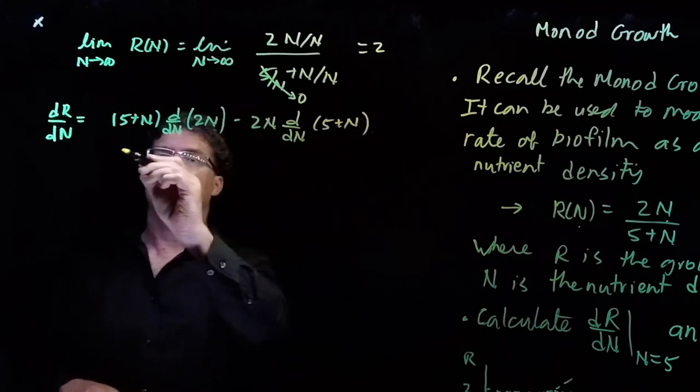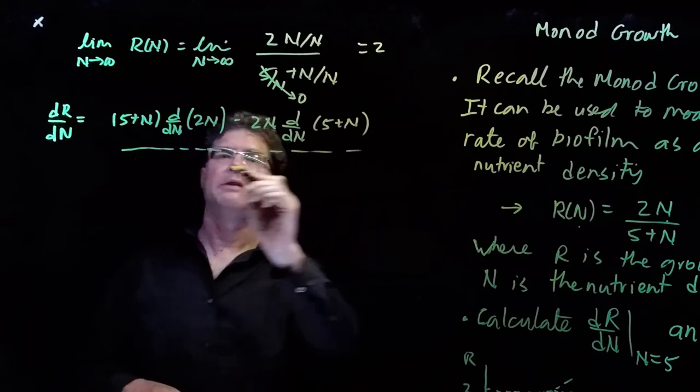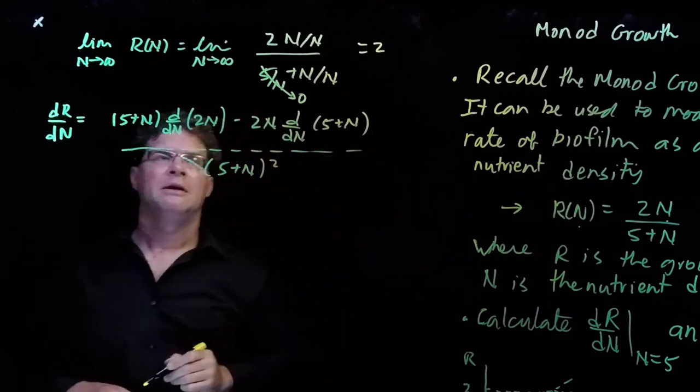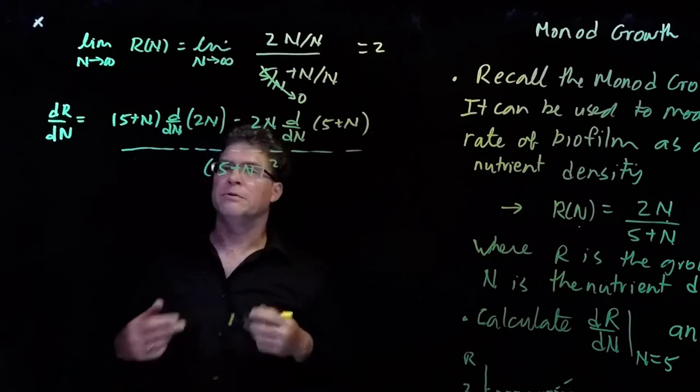And then draw the line n squared below. If you haven't heard that, that's a good way to remember how to do a derivative of a quotient.